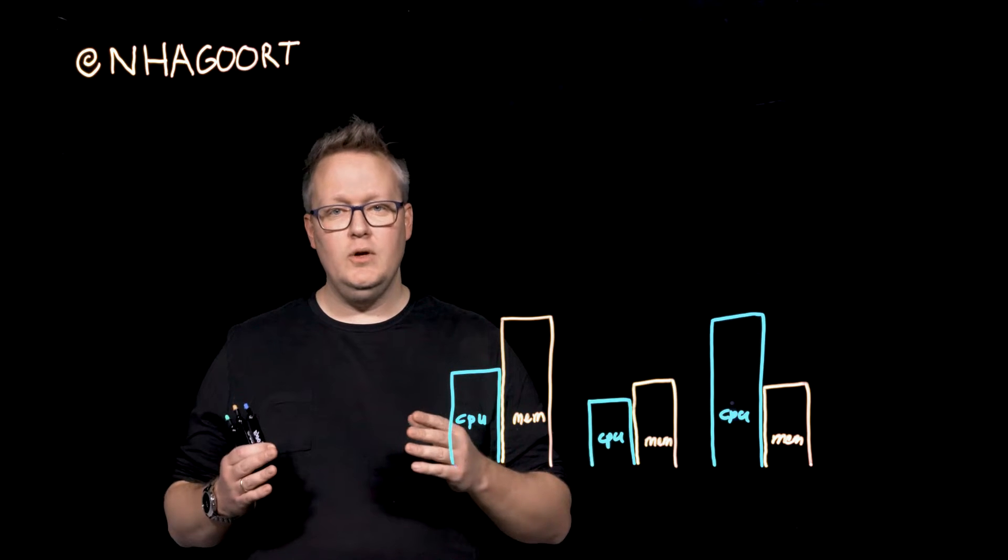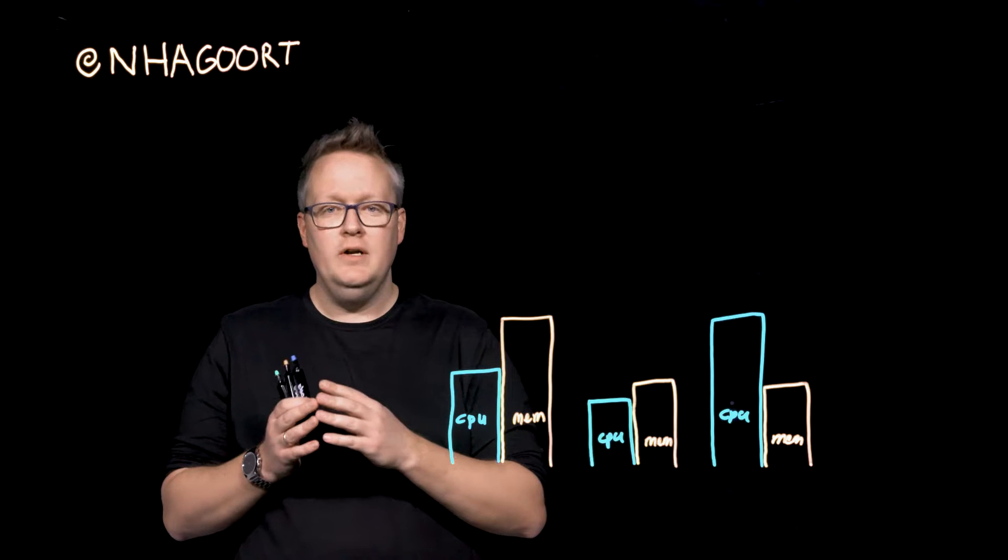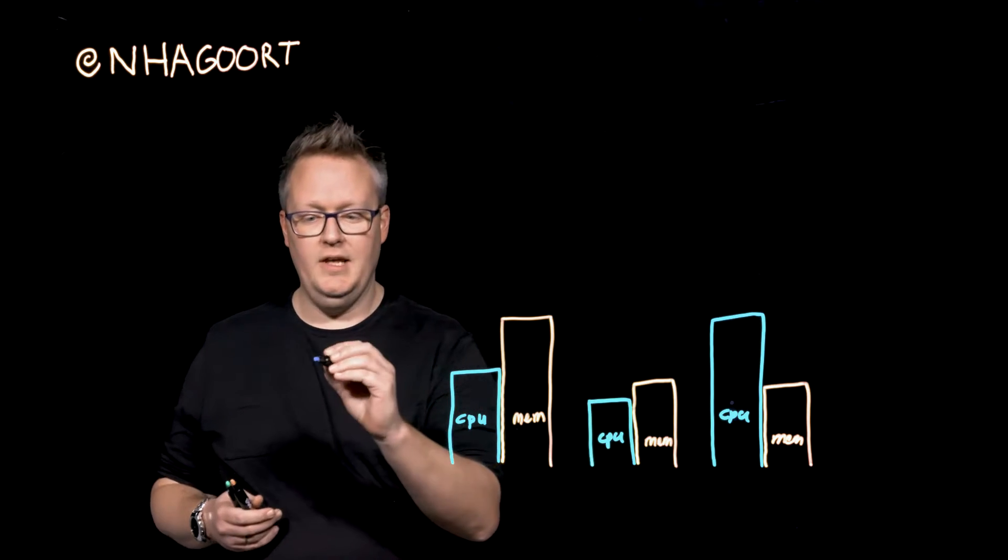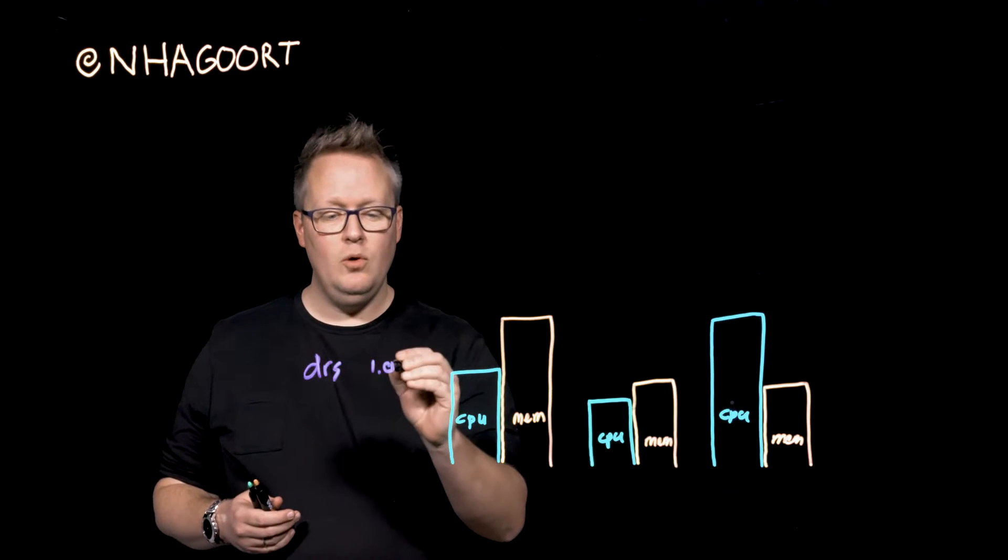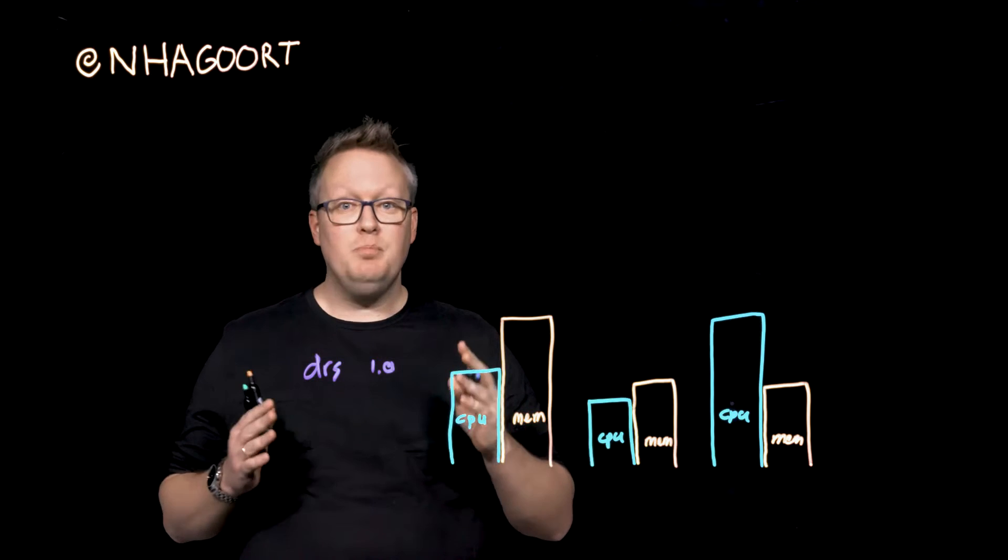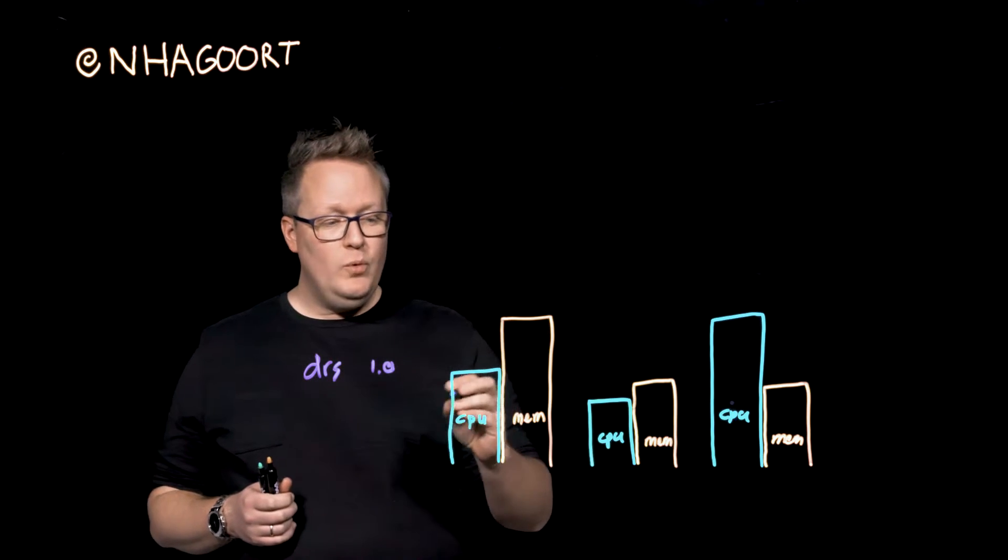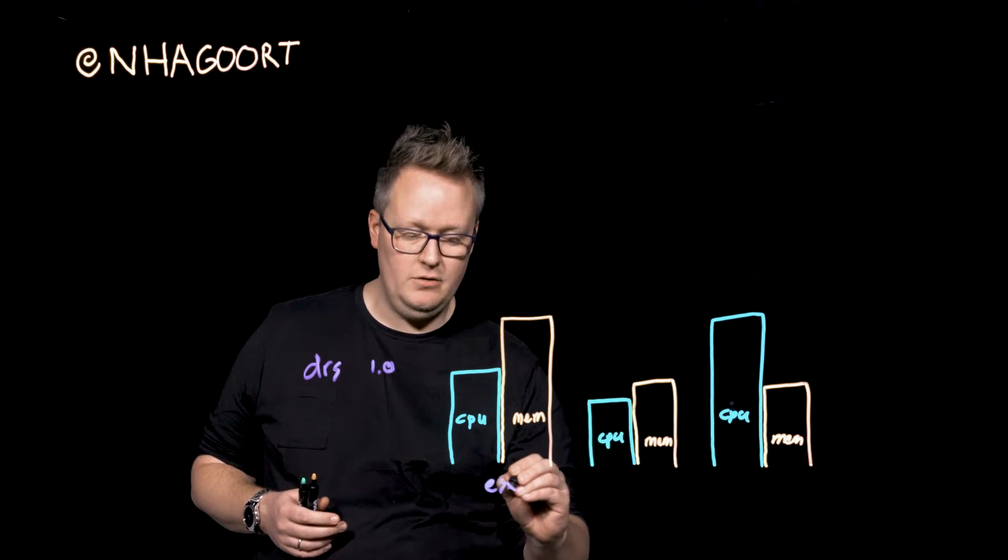Let's first take a quick look at what we did with DRS 1.0. And even though there's no real versioning in DRS, it's just DRS, let's stick with that name for the sake of this video. 1.0 or the DRS prior to vSphere 7. What we did whenever we had a VM in a cluster, so these are all ESXi hosts.